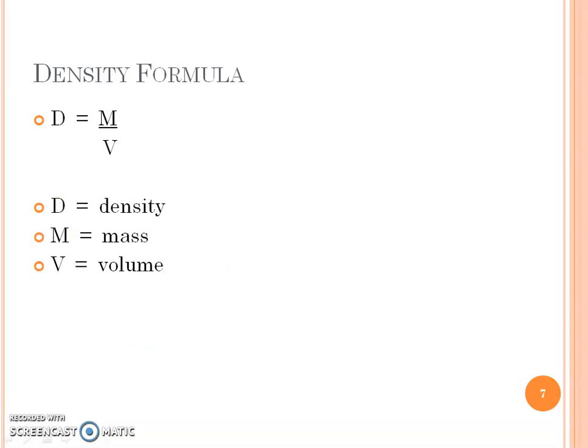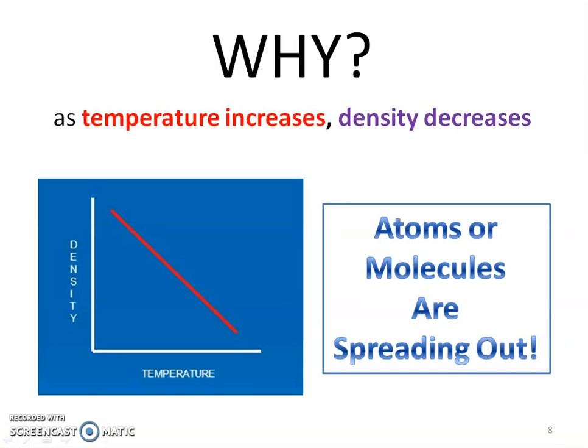Here's our density formula. Density is mass per volume. Let's talk about why as temperature increases, density decreases. This is a nice chart - we're looking at our graphs and we have a downward slope, a negative slope. What happens is as we increase our temperature of substances, those atoms or molecules are really spreading apart. As they spread apart, there's more space in between, and that means they're going to be less dense.